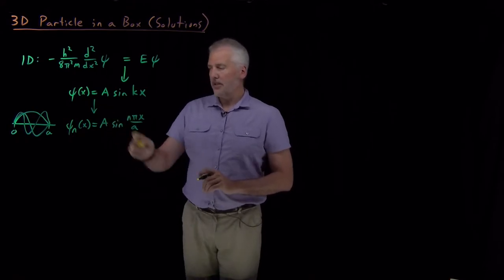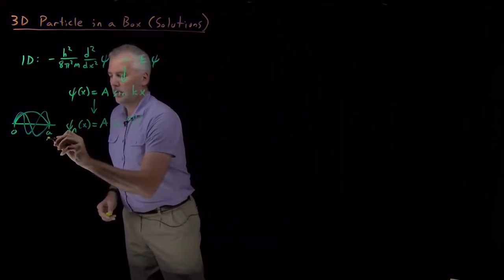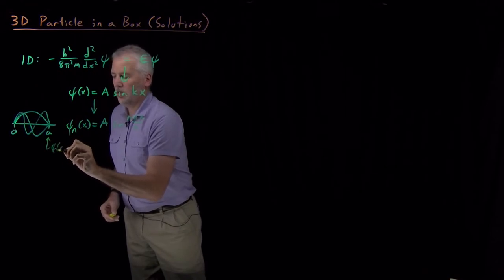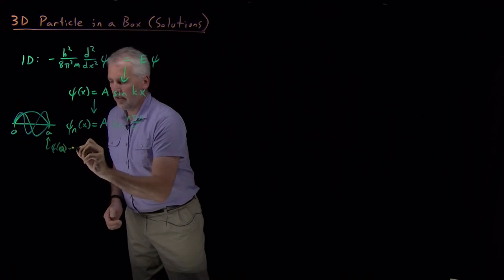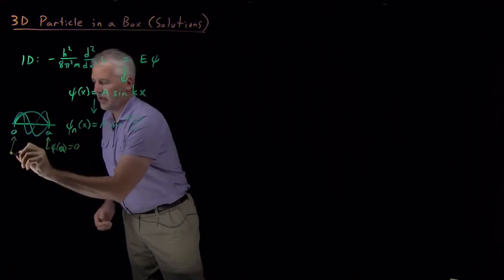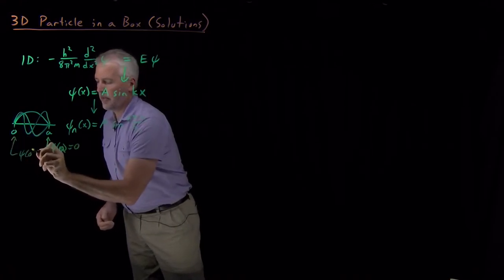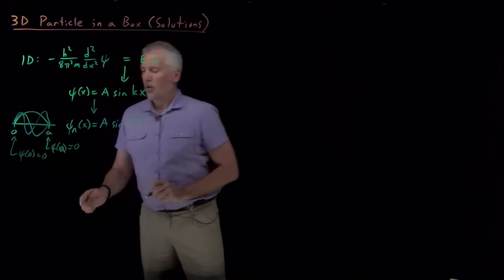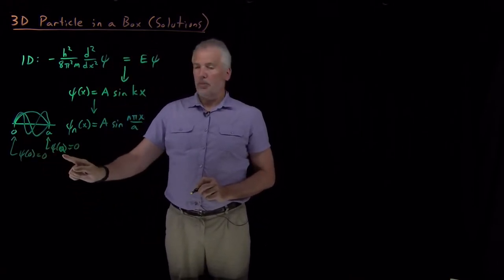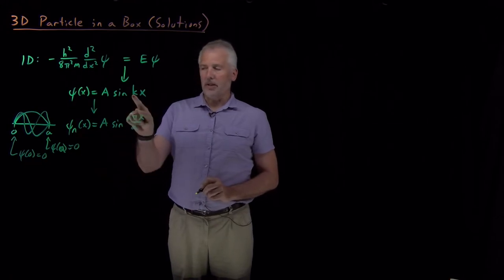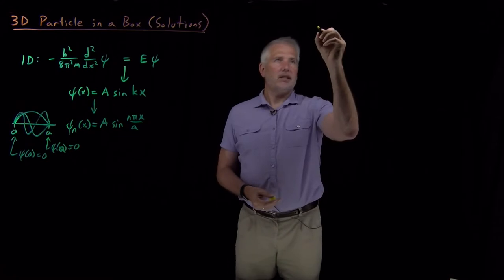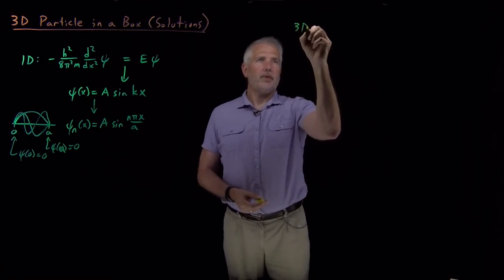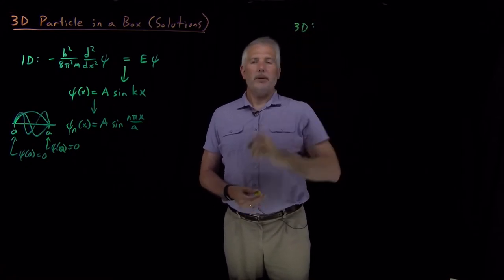We required that at the two edges of the box — when we plug in x = 0 or x = a — we have to get zero for the value of the wave function. That's how the constant k became nπ/a. We're now going to do the exact same thing for the three-dimensional particle in a box.